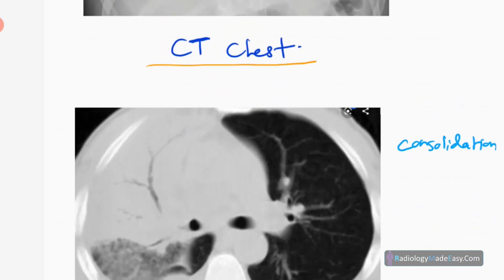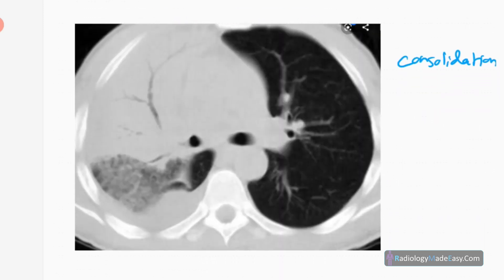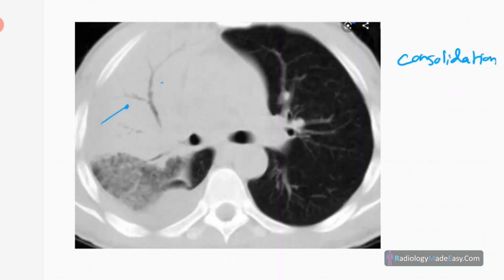Now we discuss CT and HRCT. On contrast CT chest, you can see bronchogram formations — a consolidated area in the upper lobe with a nice ground-glass appearance and pleural effusion. You can see air-space opacification with air bronchogram formation. The left upper lobe is normal. This is a contrast-enhanced CT.